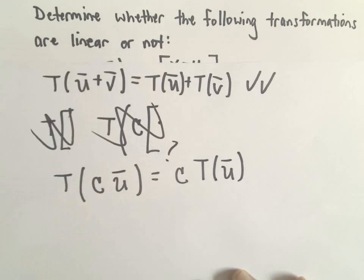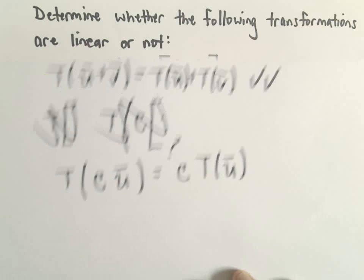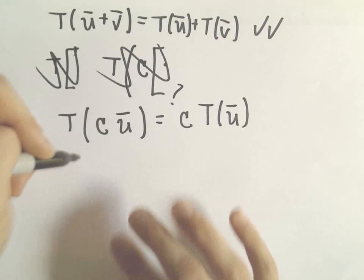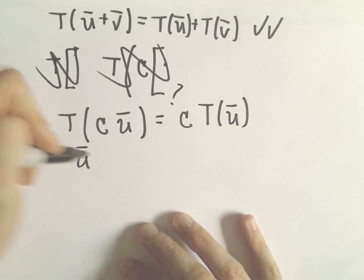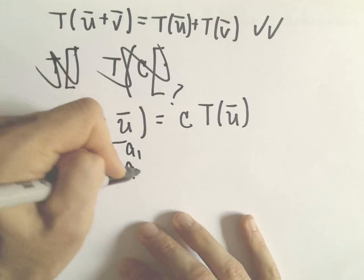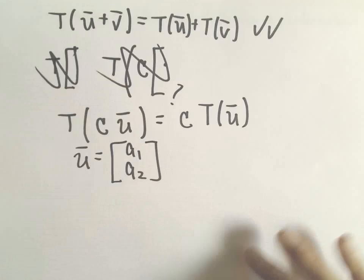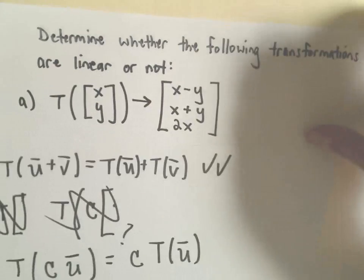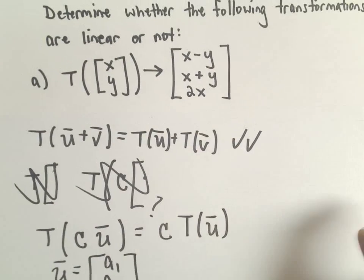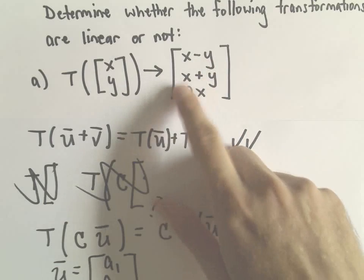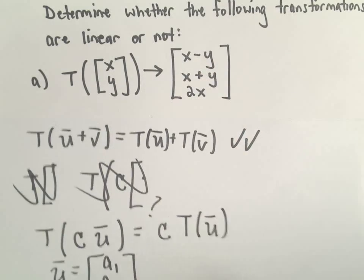So now we'll see whether or not this condition holds. I'm just going to show it generically like we did before. Vector u, we'll keep the components a1 and a2 like we had. Let's remind ourselves of the rule. It says subtract second from first, add the two components, and then double the first component.